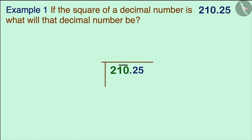For whole numbers, we start with the digit in the units place and pair them with digits on the left side, placing a bar on each pair. There are three digits so we will have two bars. To add a bar to a decimal number, we start from the decimal point and place a pair of digits on the right. Here we will have only a single bar after the decimal.